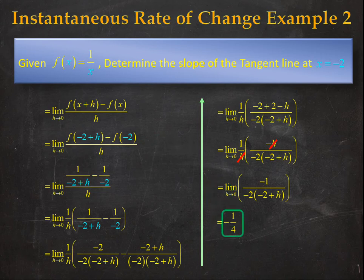This is the slope of the tangent line to our function 1 over x specifically at x equals minus 2.